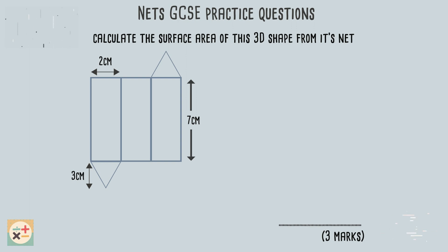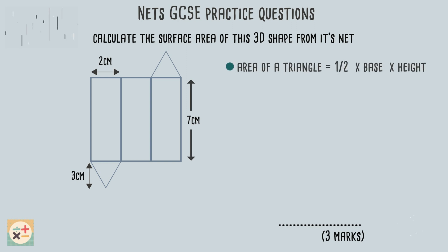Let's start with finding the area of one triangular face first. The formula for finding the area of a triangle is half times base times height. In the diagram we are given the length of the base, two centimeters, and the perpendicular height of the triangle, three centimeters. We can now calculate the area of the triangular face. Because the net contains two triangular faces, we can multiply our answer by two to find the area of both.